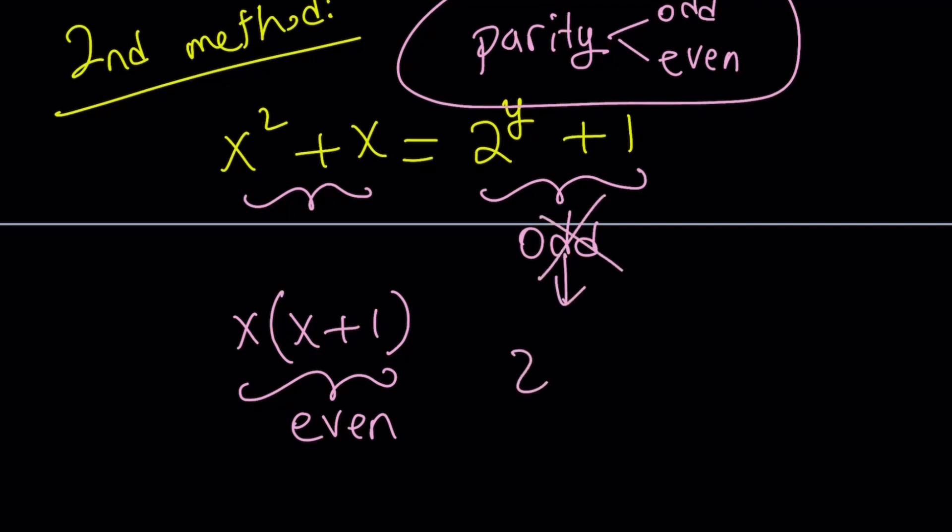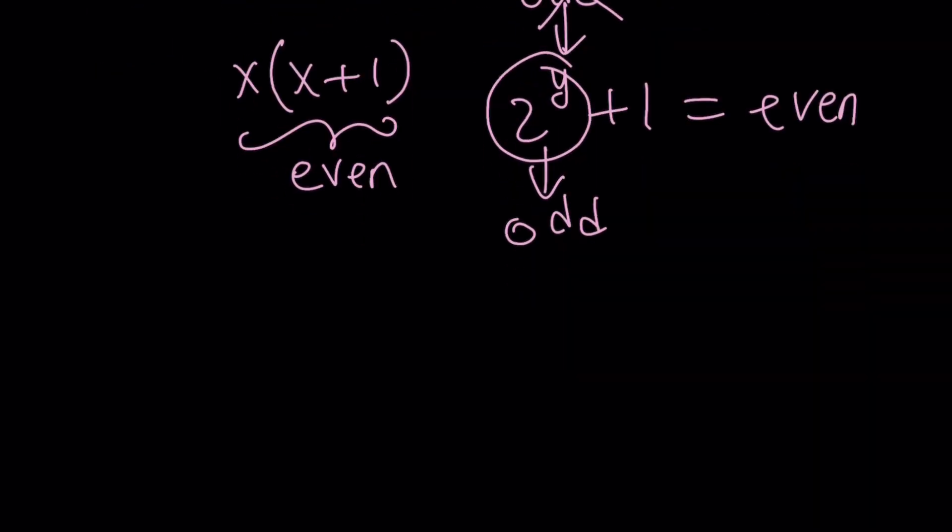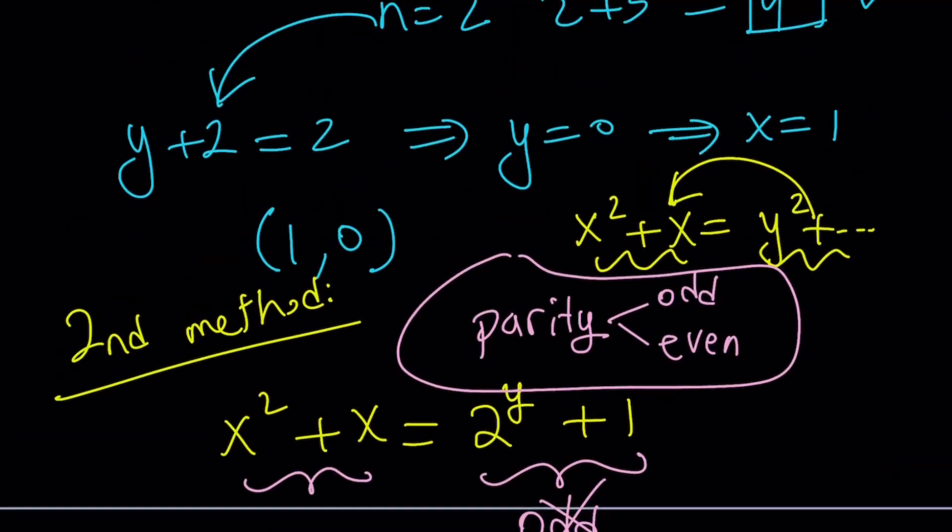How? If 2 to the power of y plus 1 can be made even, then we're in good shape. Which means 2 to the power of y must be odd. And that actually works for y equals 0. Not for negative values, not for positive values, only for y equals 0. This is going to work.